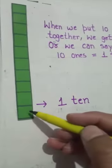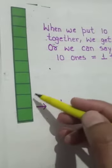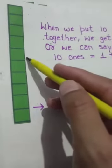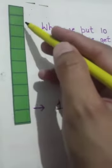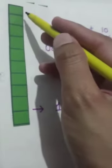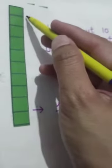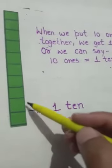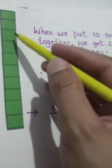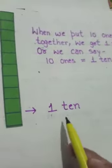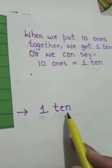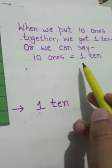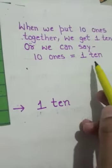Count again: one, two, three, four, five, six, seven, eight, nine, and ten. When we put these ten ones together, we get one ten. Ten ones equals one ten.